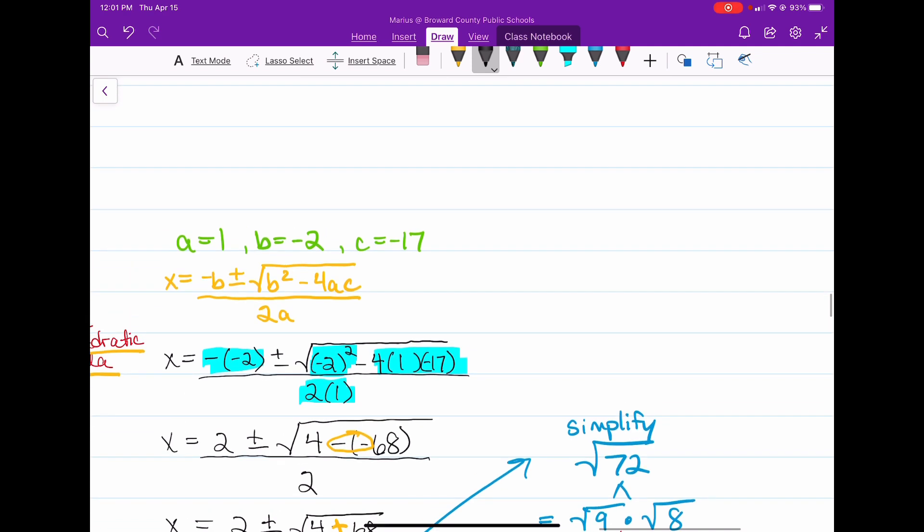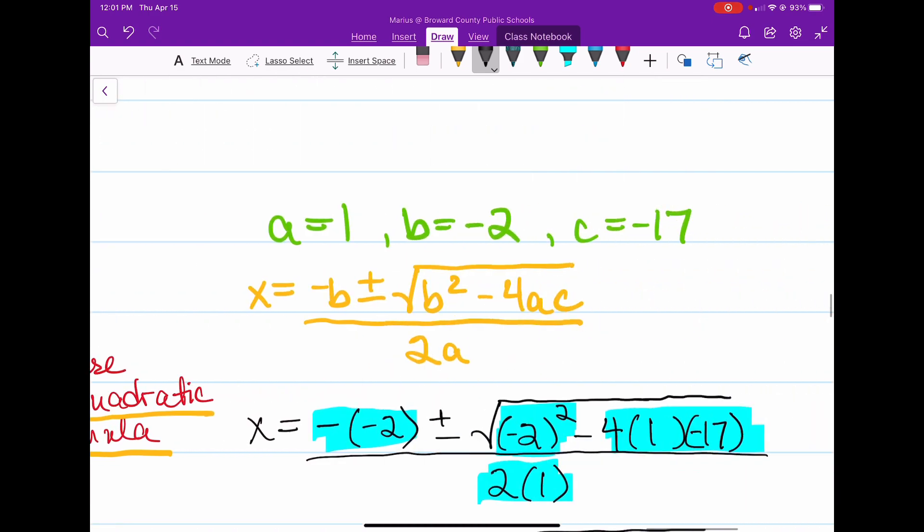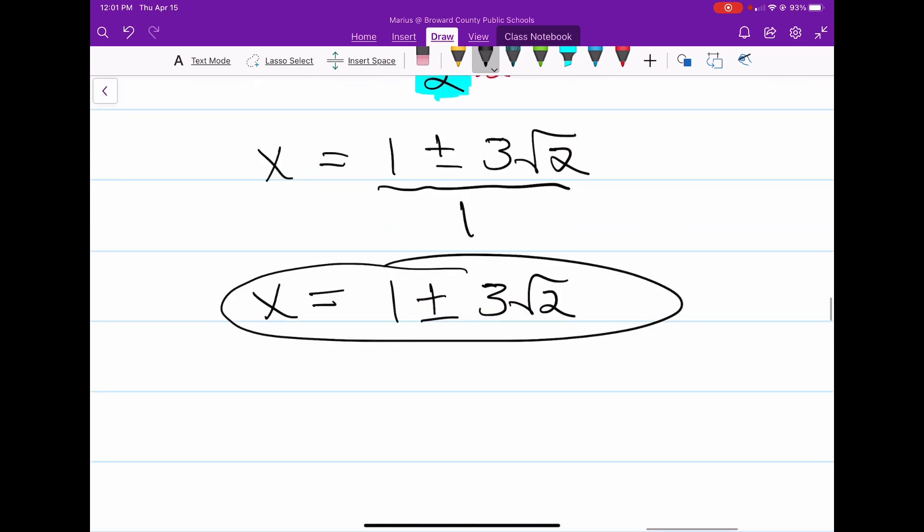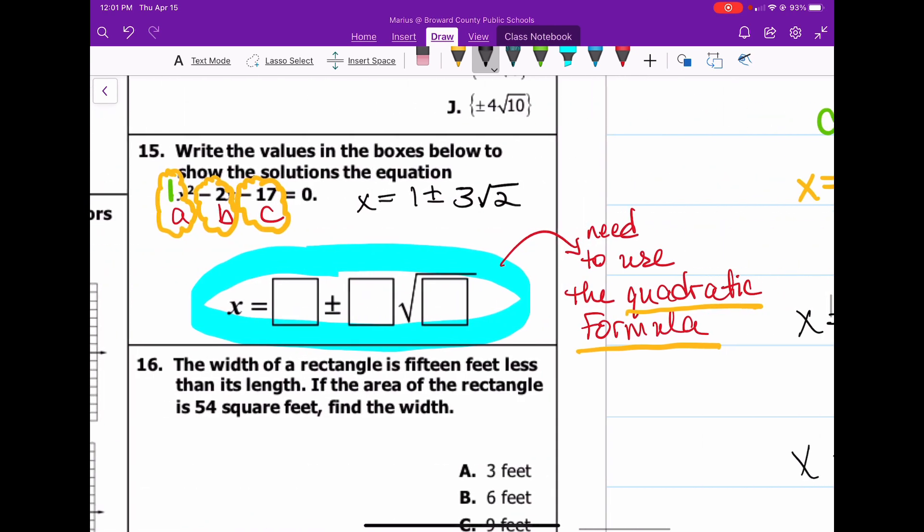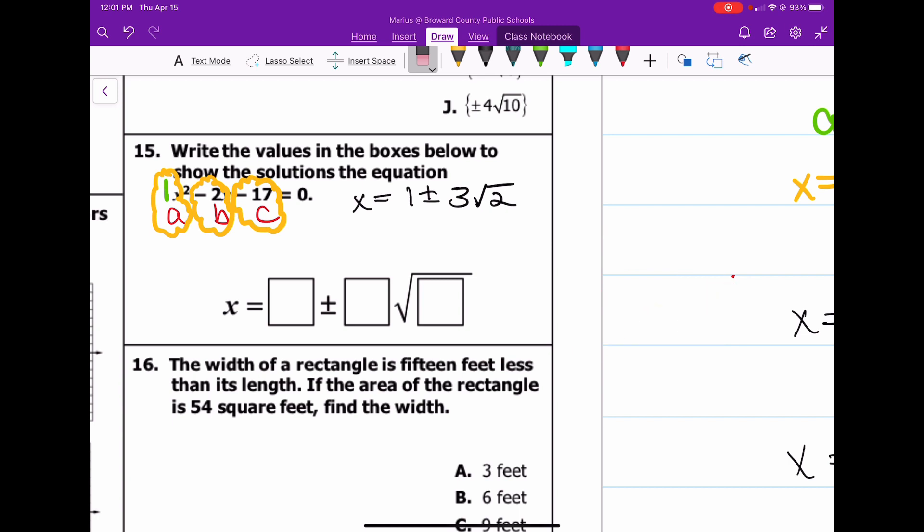Now let's scroll back up. And remember, we had x equals 1 plus or minus 3 square root of 2. Let's just double check our work. Let me scroll back down. 1 plus or minus 3 square root of 2, that's what we have. So getting back to that, I can erase all this now. We just need to fill these numbers in. This is going to be 1, we already have the plus or minus, and then 3, and then square root of 2.